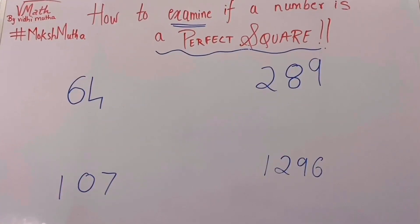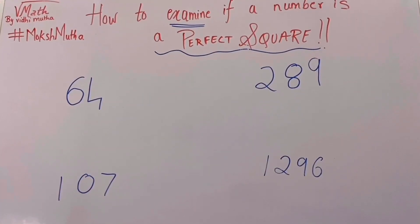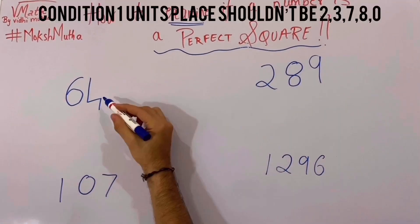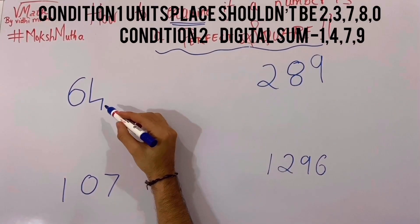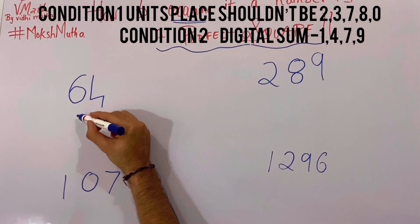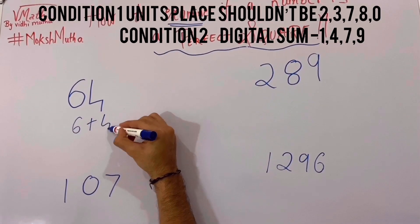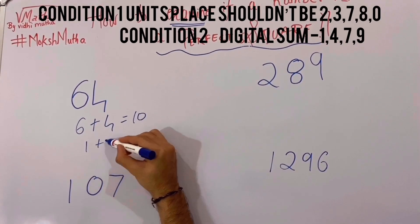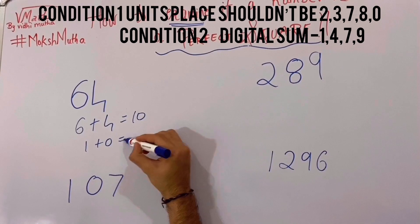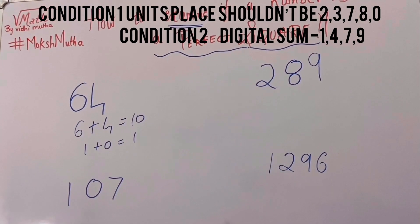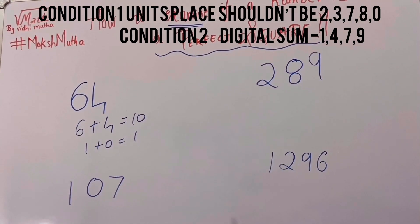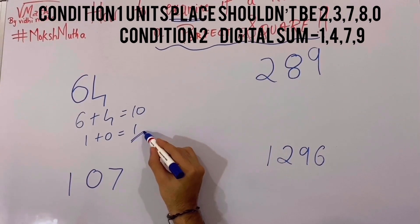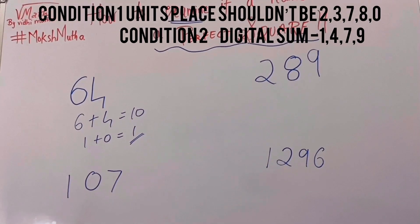To understand it better, let's do some examples. First, let's take 64. Find the digital sum of 64: 6 plus 4 is equal to 10, and 1 plus 0 is equal to 1. Note that the digital sum should be in single digit, and the digital sum is 1, so yes, it is a perfect square number.